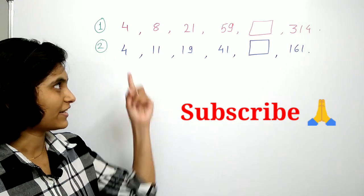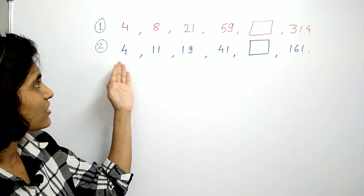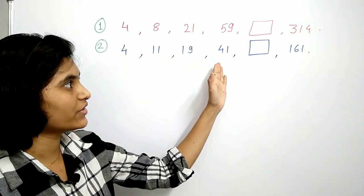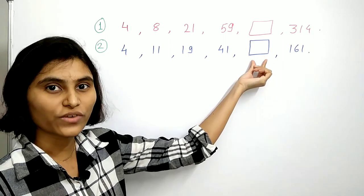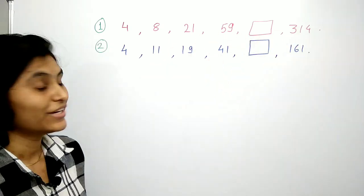Let's solve the second puzzle. The first one is somewhat tricky, so second first. Start with 4, then 11, 19, 41, and here we want to find out this missing digit, and lastly we have 161.